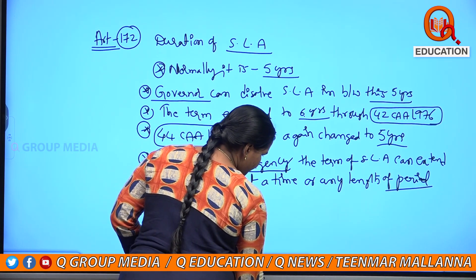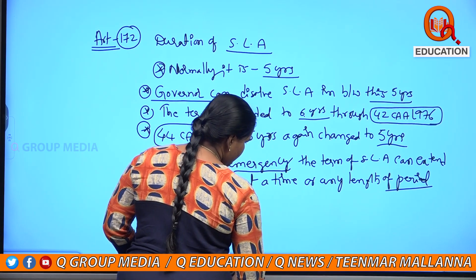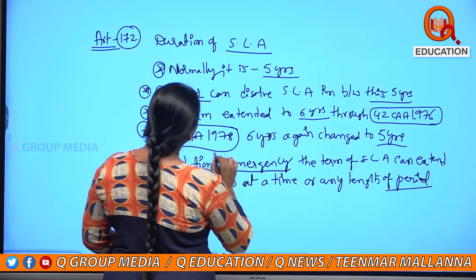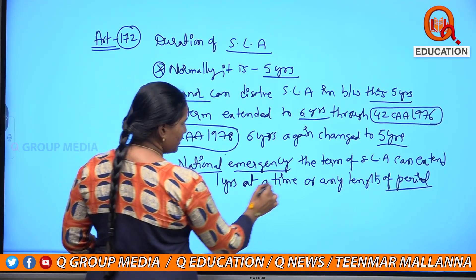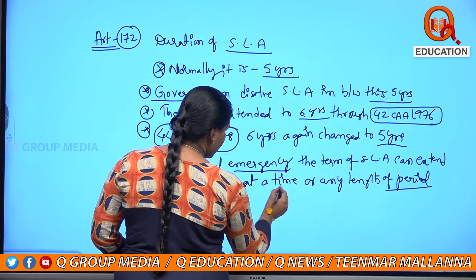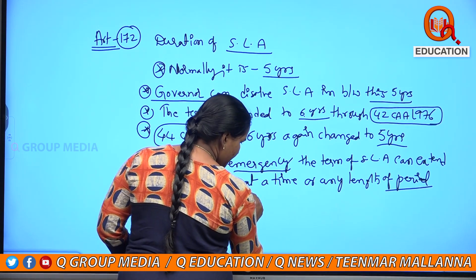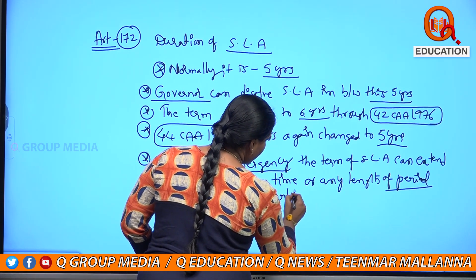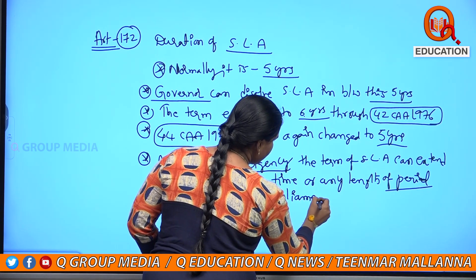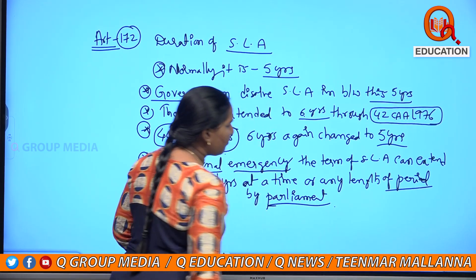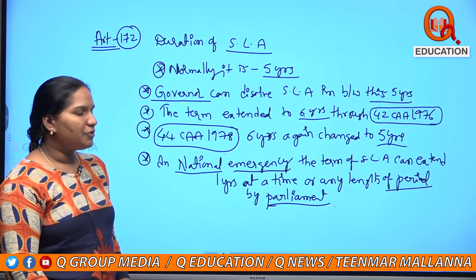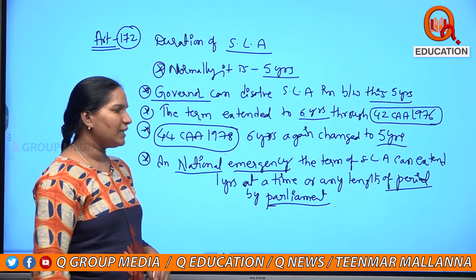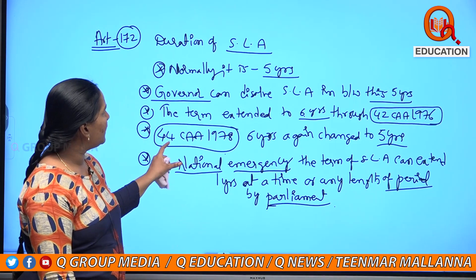So this is Article 172 — the duration of state legislature assembly, including the one-year-at-a-time extension during national emergency, extended by Parliament.